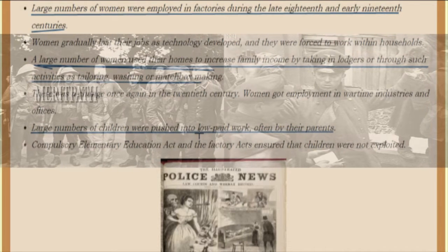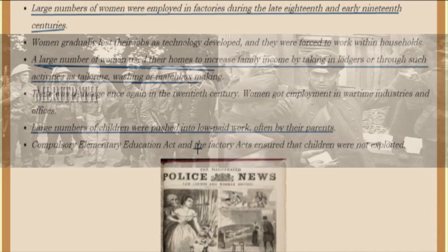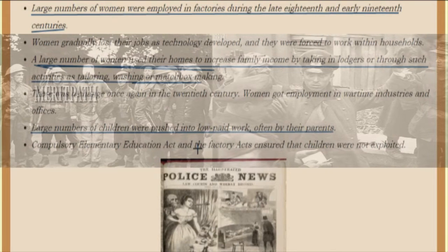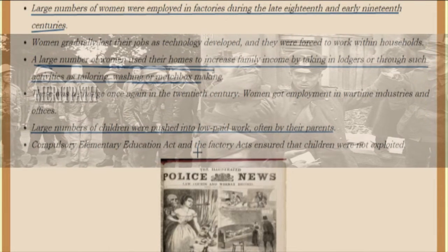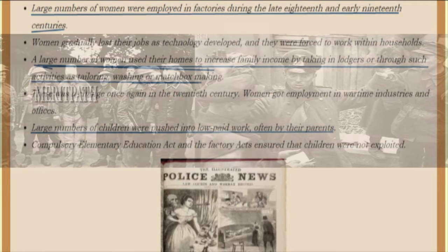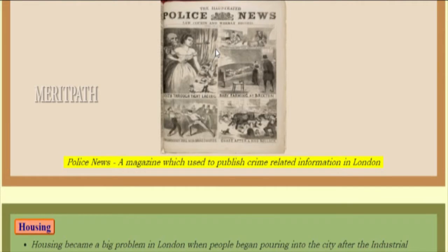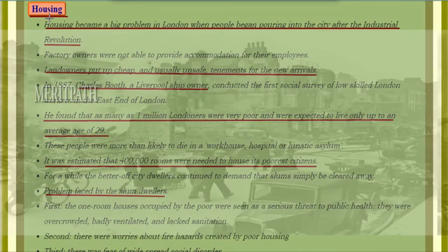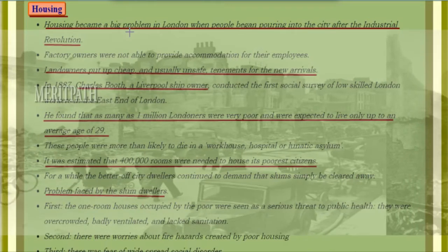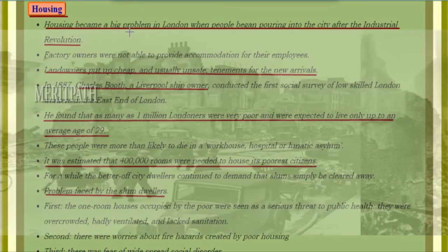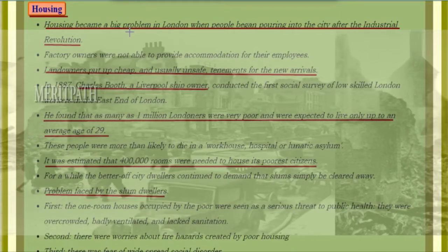Large numbers of children were pushed into low-paid work, often by their parents. The Compulsory Elementary Education Act and the Factory Acts addressed this issue. We can also see in this period the Police News, a magazine which used to publish crime-related information in London. Housing became a big problem in London when people began pouring into the city after the industrial revolution.